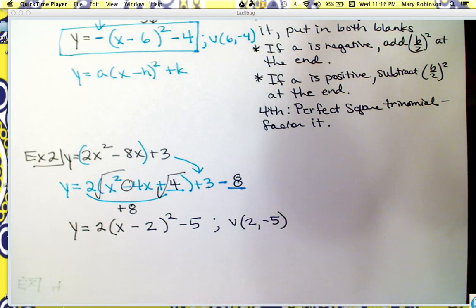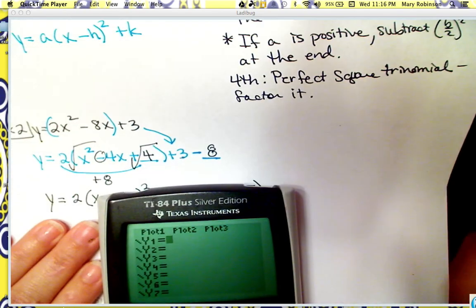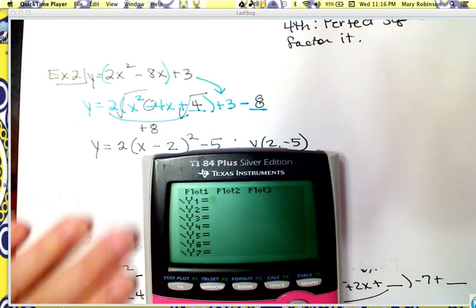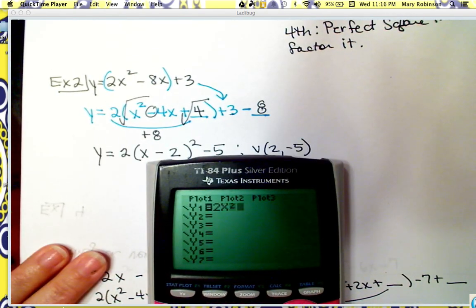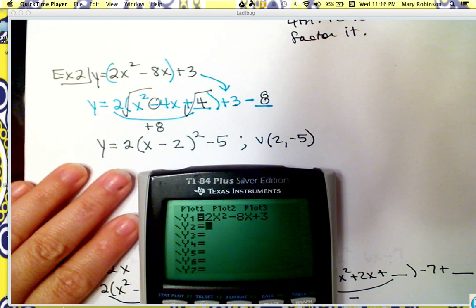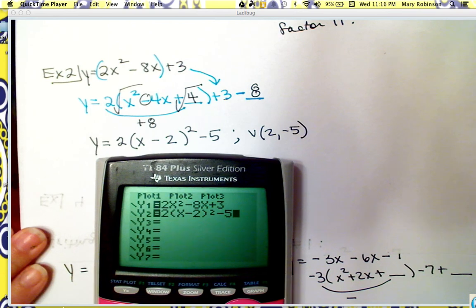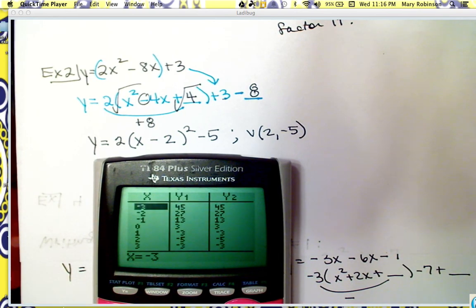Let's go ahead and verify it in our calculators. We've got 2x squared minus 8x plus 3, and we verify it equals 2 times the quantity x minus 2, squared, minus 5. We check it on our table, and it does match. So I'm confident the answer is correct.